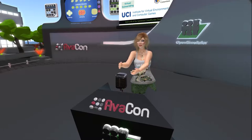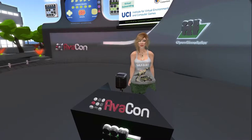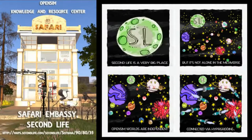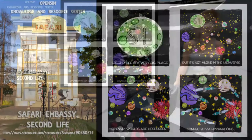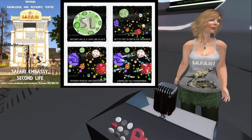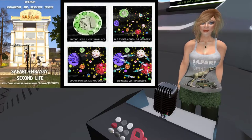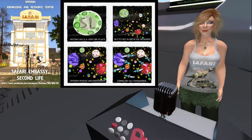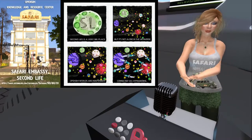I'd like to begin today by unpacking the title of this talk — The Economy of Appreciation in Open Sim — really referring to the hypergrid-friendly worlds. Although Second Life is a very large and diverse place, Open Sim is even larger and even more diverse. It can be broken up into many different divisions or realms — adult versus child-friendly worlds, and commercial versus money-free worlds.